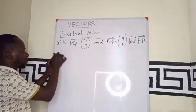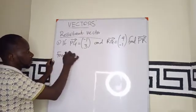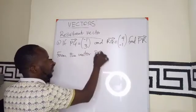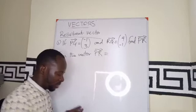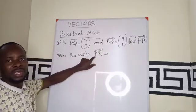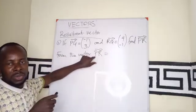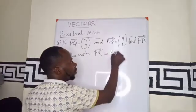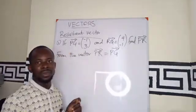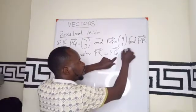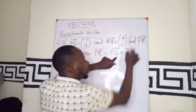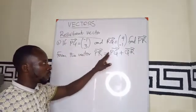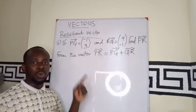From the vector, we can say that our PR is going to be, the journey is from P to that unknown destination. We know P, Q, R. So from P, we move to Q. Then from that destination, we change our course again and move to R. So we have PR equals to PQ plus QR.